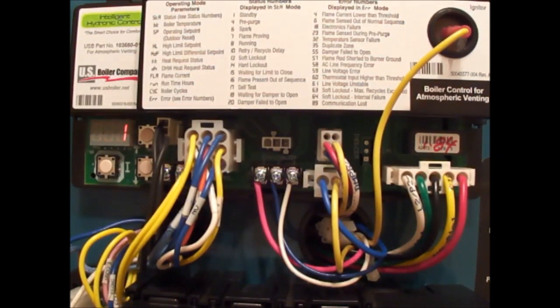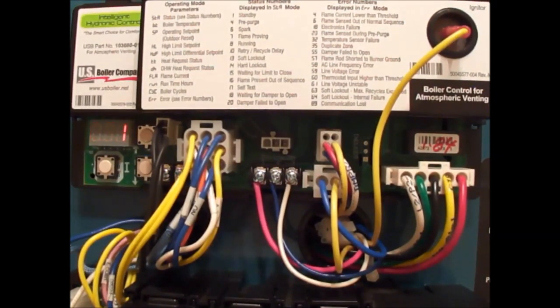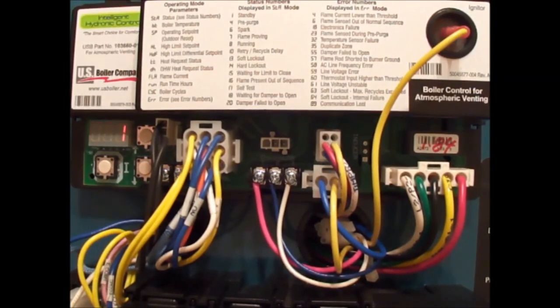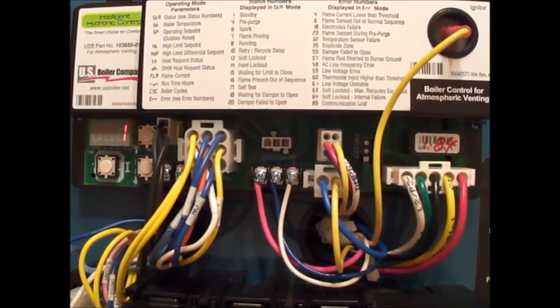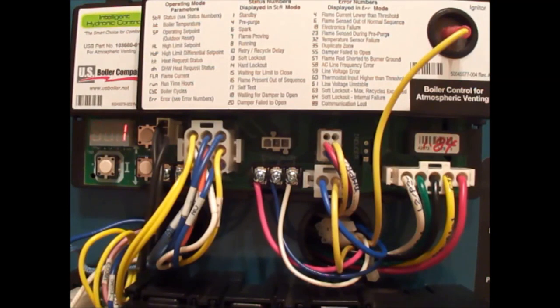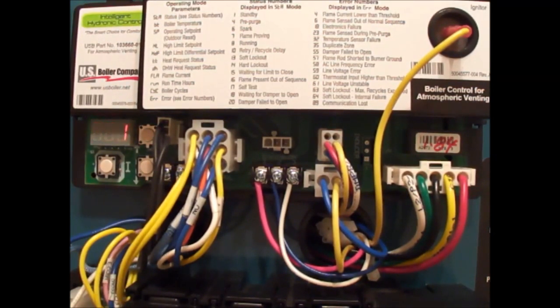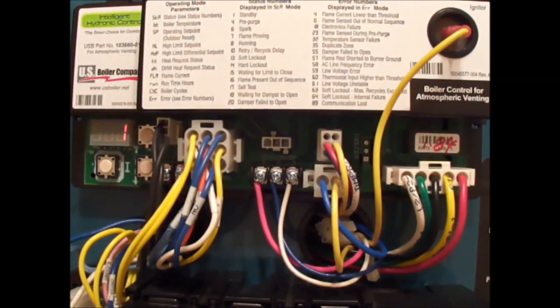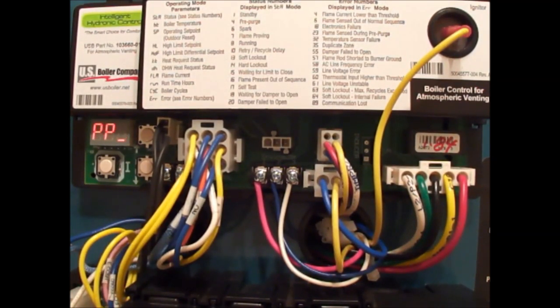The next one we have is pre-purge. Pre-purge is a setting where the pump comes on first and we use residual heat first. This is a nice feature because we're using the heat in the boiler before we fire the boiler. If the boiler has more than 140 degrees water temperature and we get a call for heat, we do not fire the boiler. This is a new code that came about September 1st of 2012.